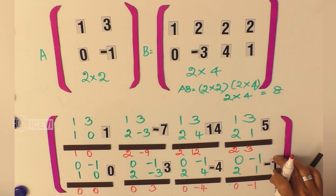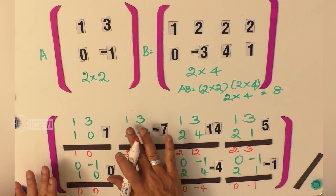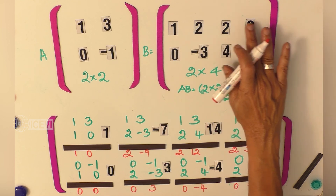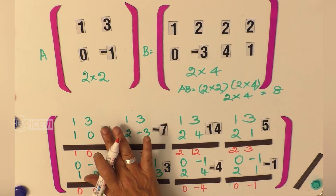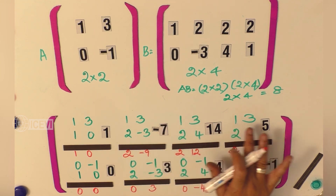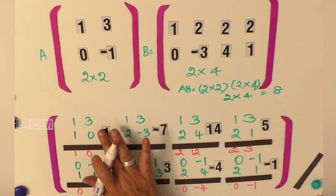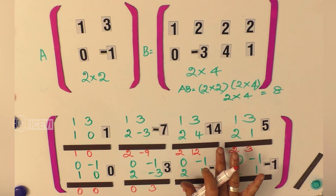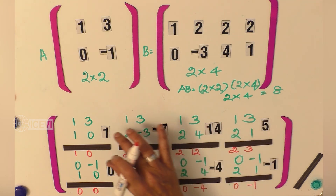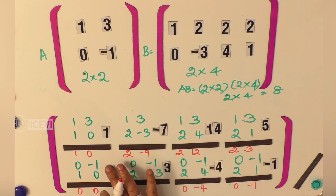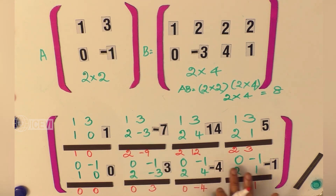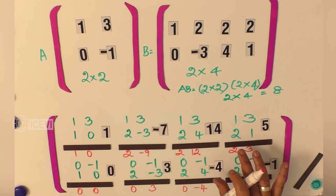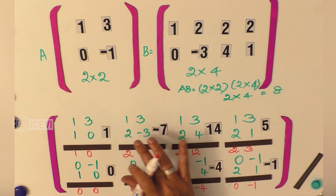When demonstrating, use the braille numbers. Matrix A and matrix B all have braille numbers. The result matrix has two rows: the first row contains 1, minus 7, 14, 5 and the second row contains 0, 3, minus 4, minus 1 as its elements. So the resultant matrix is a matrix of 2 by 4 order.